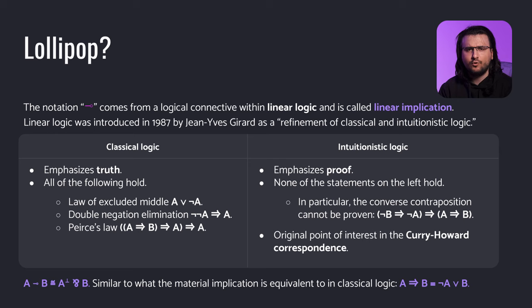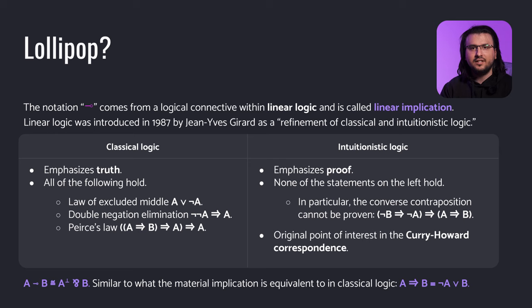A quick overview of the differences. In classical logic, we're interested in the ability to tell if a statement is true or not. The following three laws hold and are equivalent: the law of excluded middle, the double negation elimination law, and Pierce's law. In intuitionistic logic, we're interested in the ability to tell if a statement can be proven or not. None of the three aforementioned laws hold. Moreover, the converse law of contraposition cannot be proven.